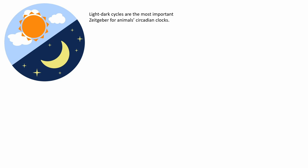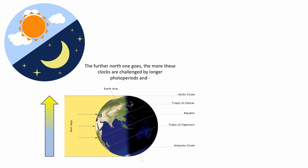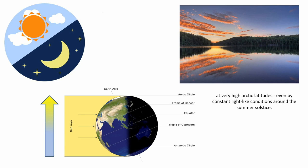Light-dark cycles are the most important timekeeper for animal circadian clocks. The further north one goes, the more these clocks are challenged by longer photoperiods and at very high arctic latitudes even by constant light-like conditions around the summer solstice.